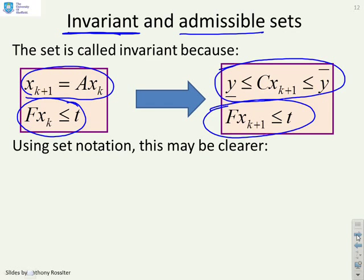This bit up top is the admissible. It says not only am I inside the same set, but when I'm inside that set, I must be satisfying constraints. So invariance simply says that once you start in the set and you follow a given dynamic, you stay in the set. The admissible bit says not only do I stay in the set, but I also satisfy constraints.